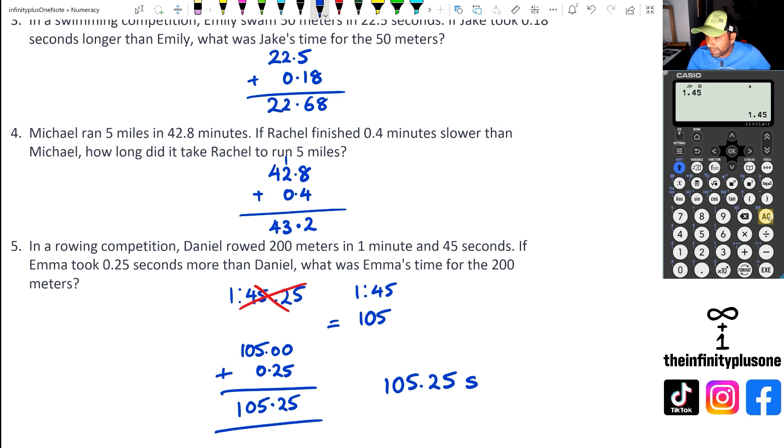So what you would have to do is you'd almost have to do it like this with a mixed number: you would go 1 and then you'd put 45 over 60. So when you do that you actually get 1.75, that's actually 1.75 minutes.